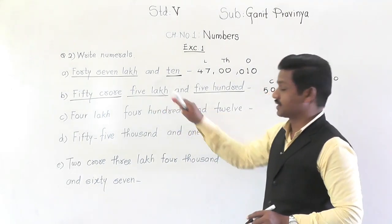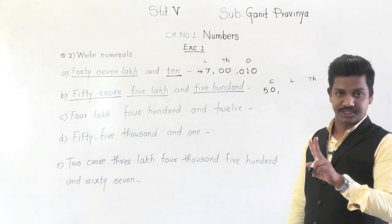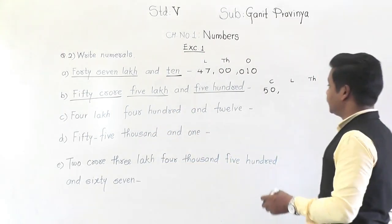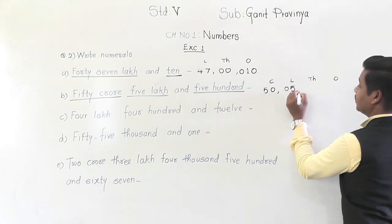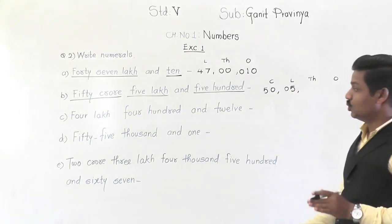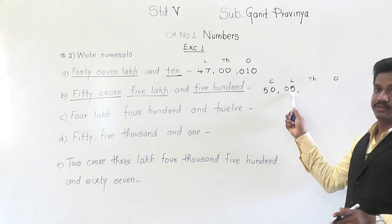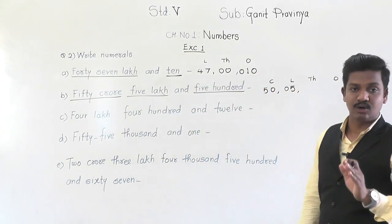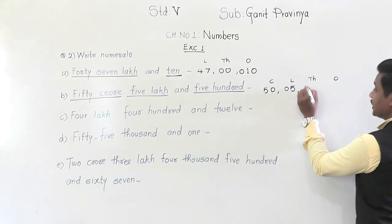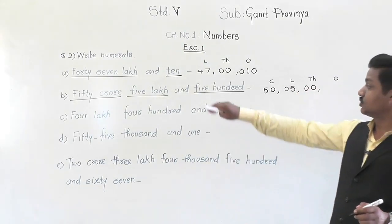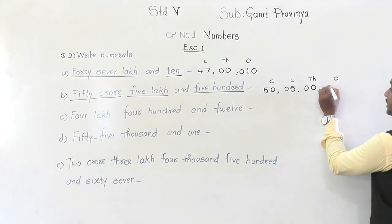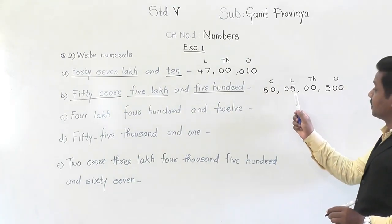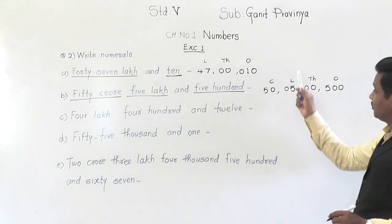The thousands group is missing — no thousands — so write 00. In the ones group there is 500. The numeral for 50 crores, 5 lakh, and 500 is 50,05,00,500.